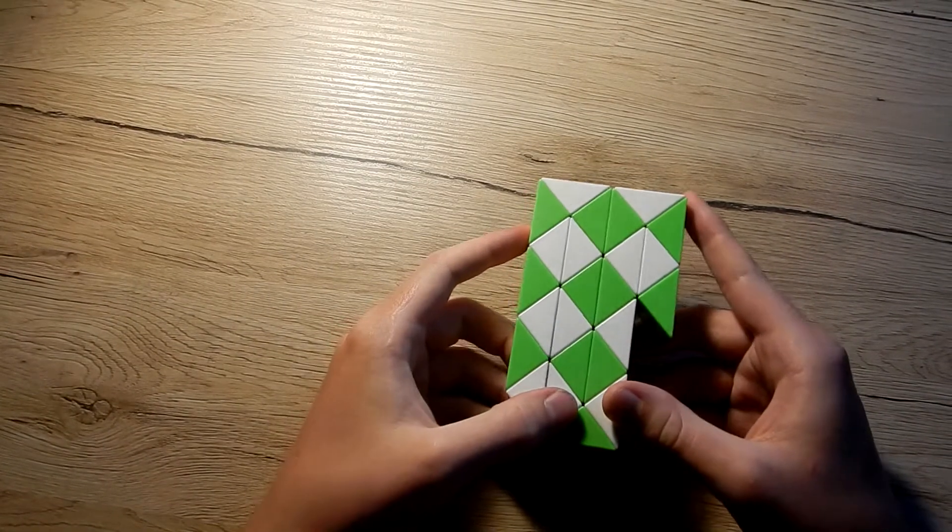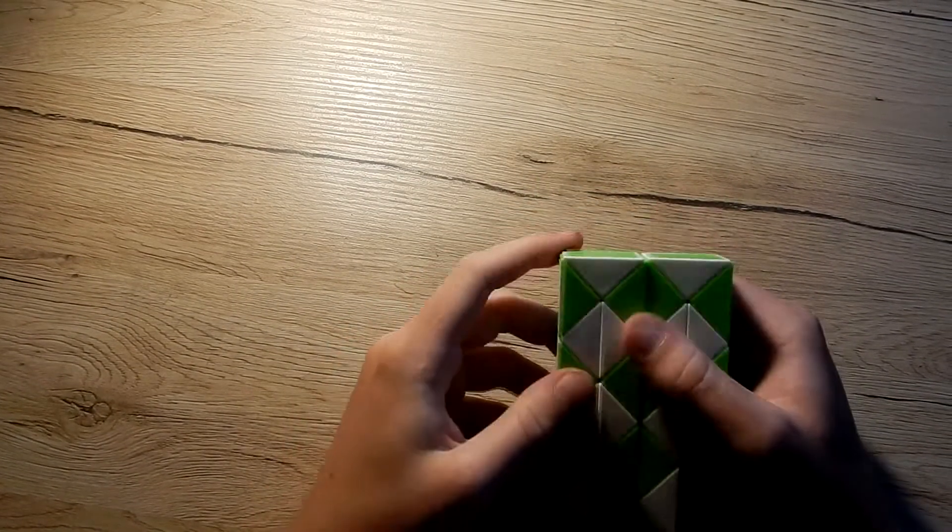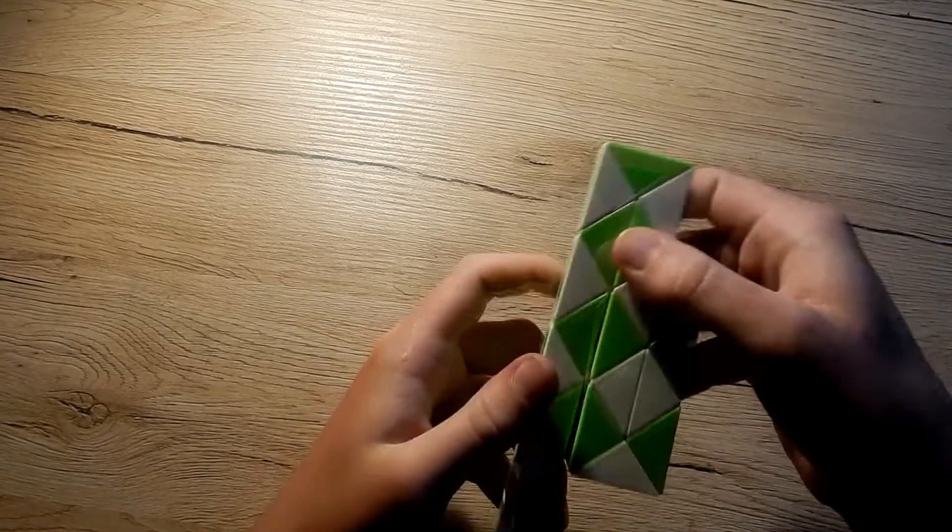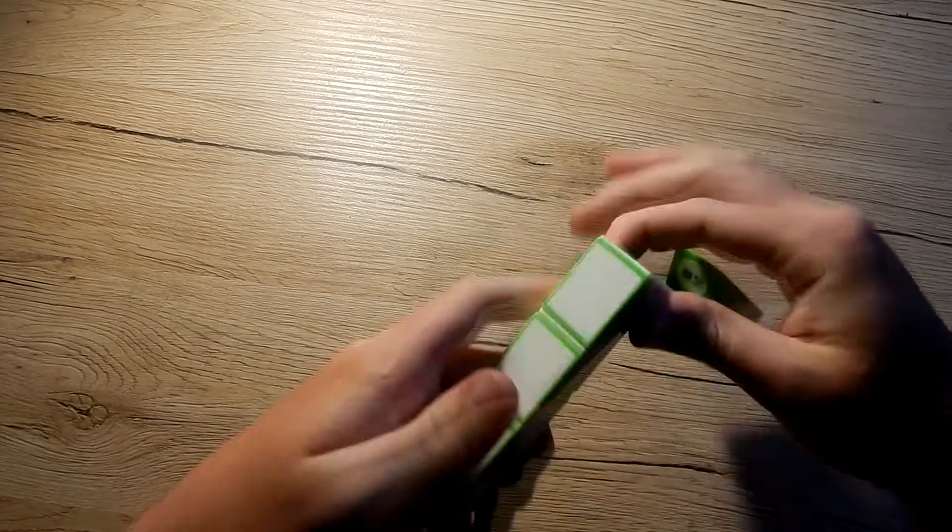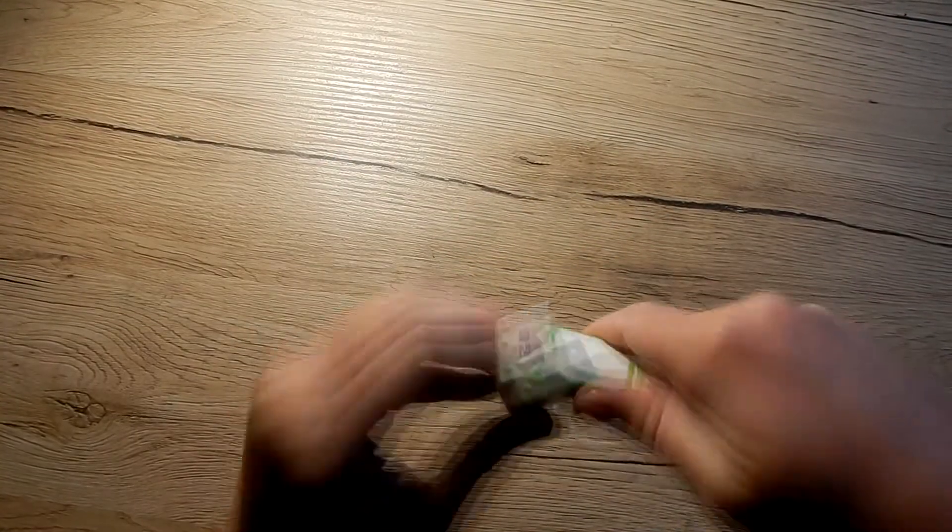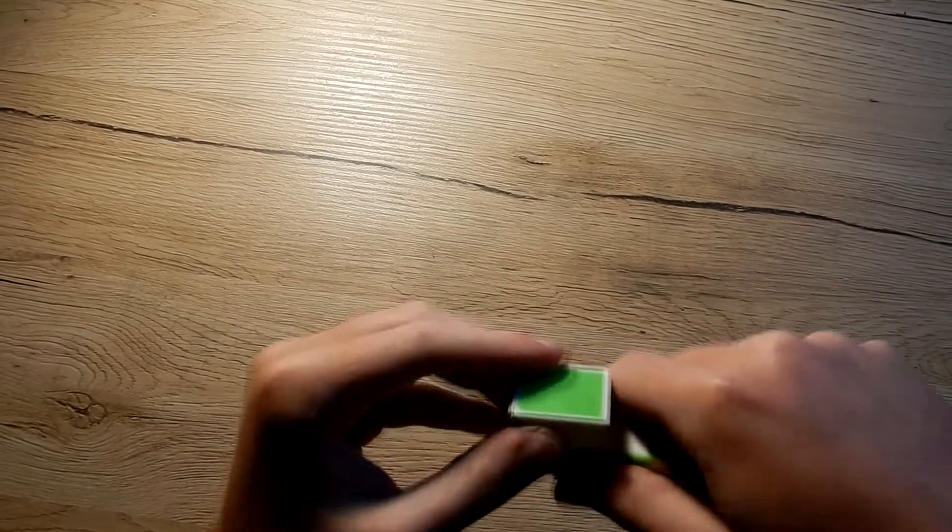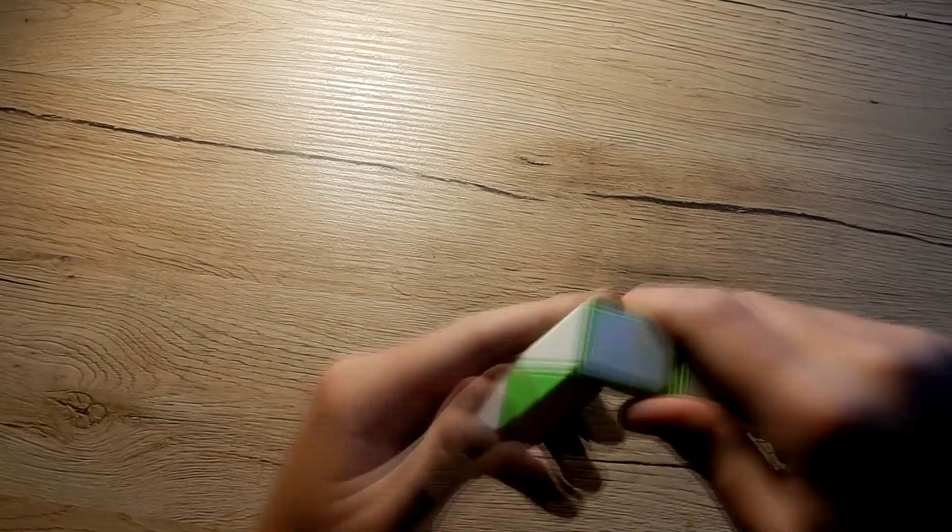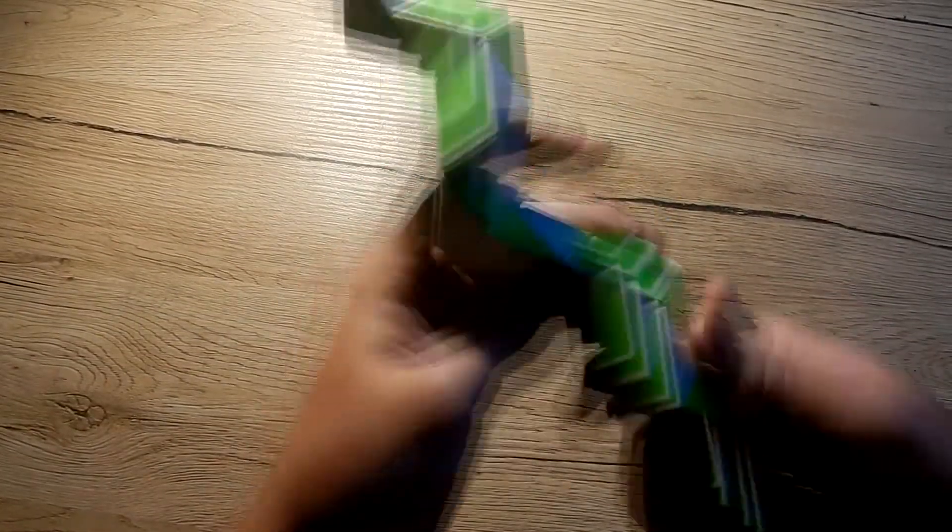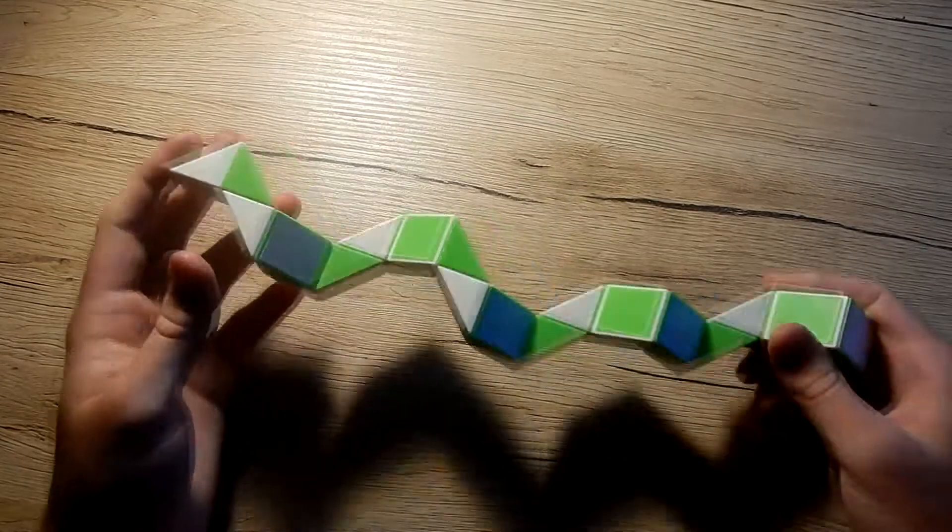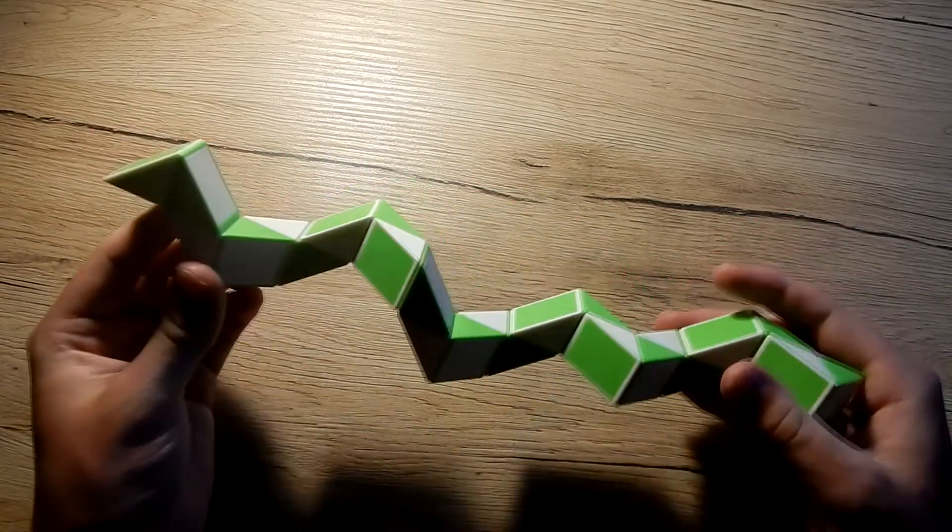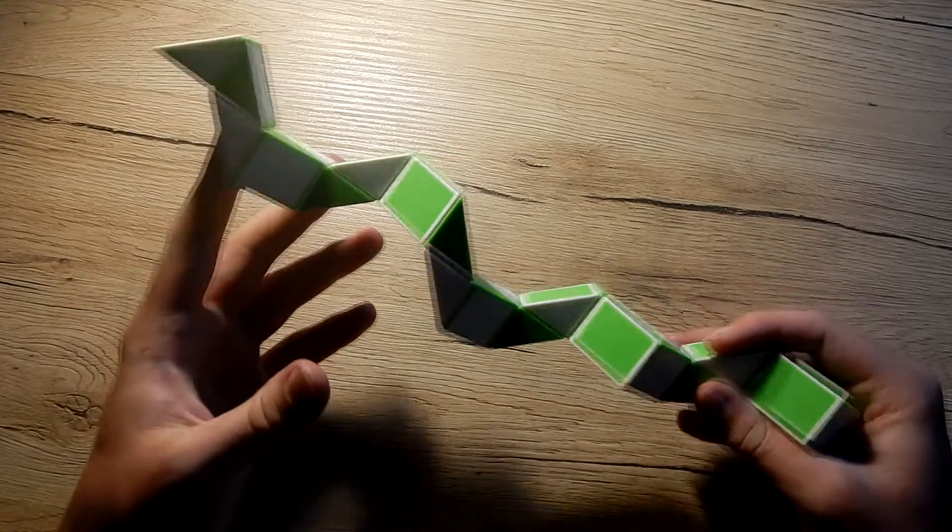The first one is Rubik's Snake. It's not a puzzle, but I like it. I can't make many shapes of it yet. I can make this snake shape. I don't know, but I kinda like it.